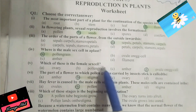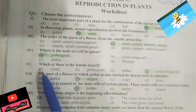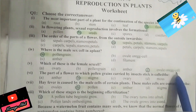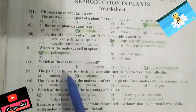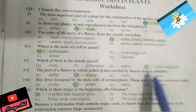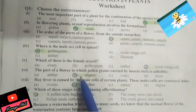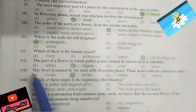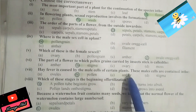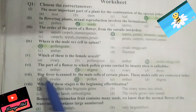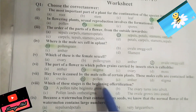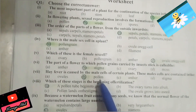Part 5: the female sex cell is the ovule. That is D part. Part 6: the part of a flower to which pollen grains carried by insects stick is called the stigma — B part. Part 7: hay fever is caused by the male cells of certain plants. These male cells are contained in the pollen.